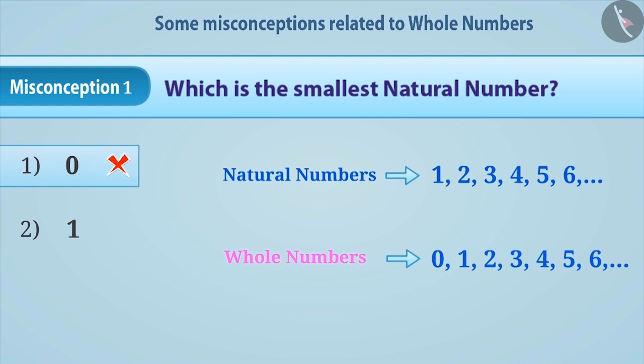This is a misunderstanding. The correct understanding is that natural numbers start from 1, therefore the smallest natural number is 1. 0 is not a natural number. It is a whole number.